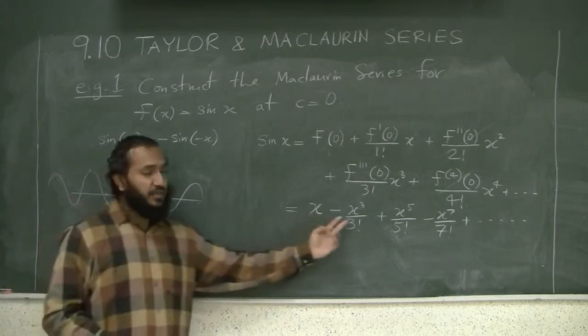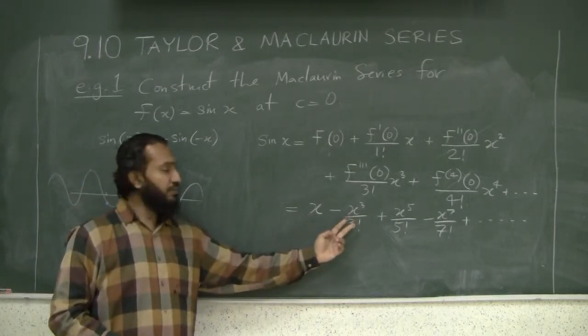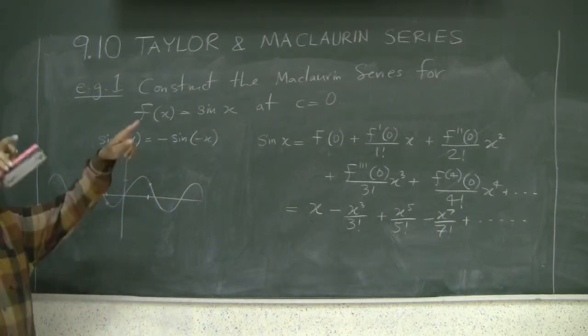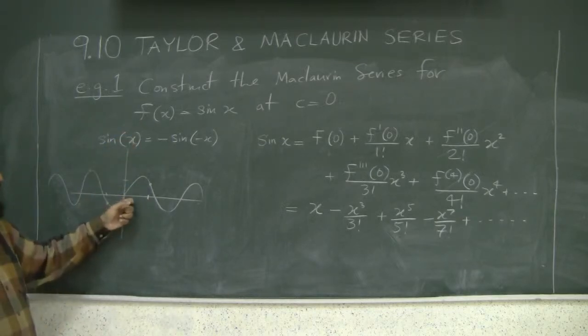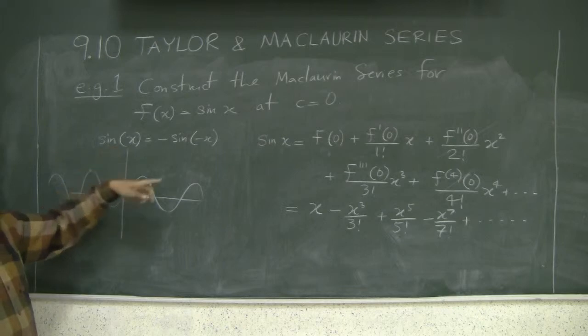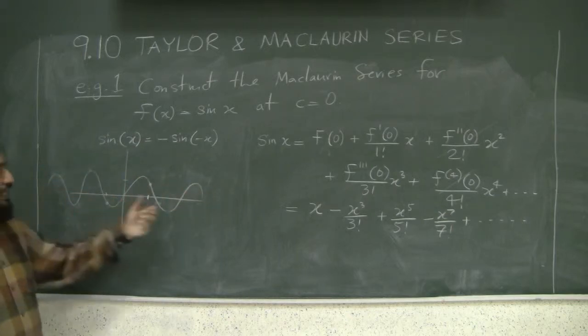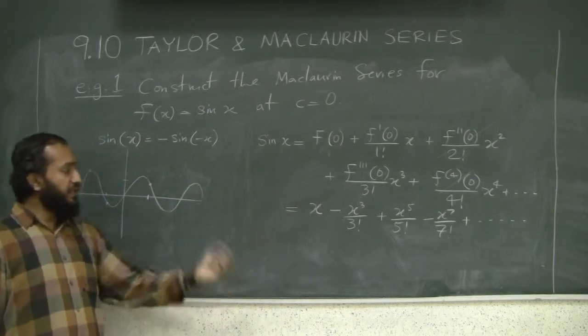If we had even terms there, the even terms are symmetric with respect to zero, and that would break the symmetry that sine has. By the same reason, cosine, which is symmetric about zero—like you can put a mirror there and the graph looks the same both ways—has only even degrees.